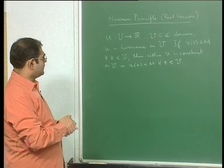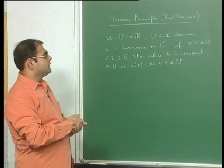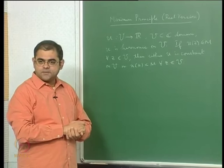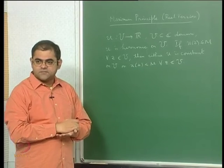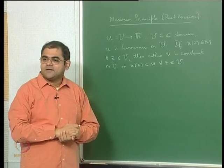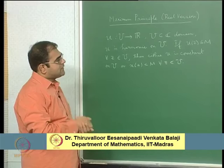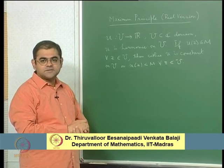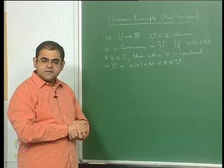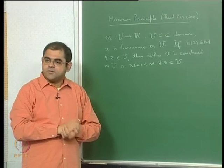The point about an open set is that every point is an interior point. So what we are saying is that a harmonic function cannot attain a maximum at an interior point. Therefore, if you can extend the harmonic function continuously to the boundary, you should expect the maximum to be attained on the boundary.